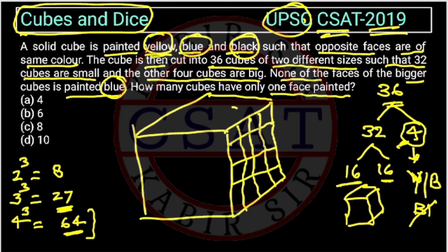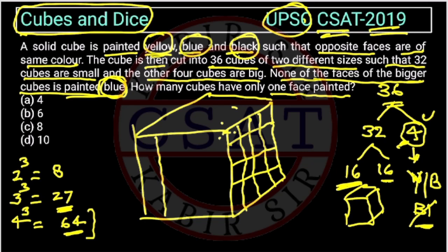The third concern is that the bigger cube will never come on the corners. Why? Because if they come on the corners, they would get painted on 3 sides — yellow, blue, and black. But the question states that none of the faces of the bigger cube is painted blue. So the bigger cubes cannot be at the corners; they will come in the middle.